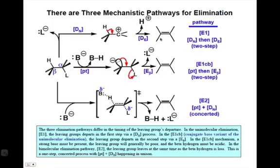Using the D_n, D_E, and E_β steps, along with other elementary steps that you've learned about already, we can construct three major mechanistic pathways for elimination reactions. These differ in the timing of the deprotonation and leaving group dissociation events. They can either be concerted or asynchronous, and if they're asynchronous, either leaving group dissociation can happen first, or deprotonation can happen first.